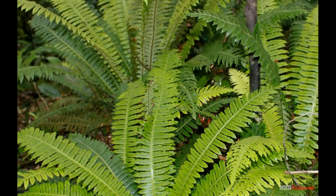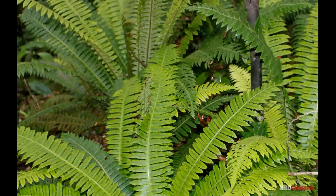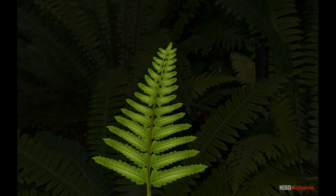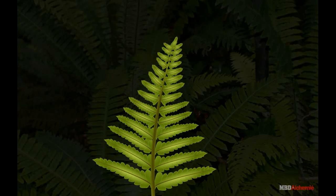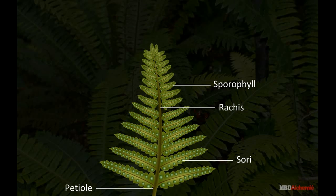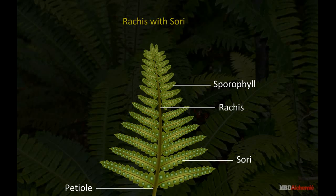Rhizome is densely clothed with numerous scales or rhamenta. Leaves are large, compound and look like a branch, hence named as frond. Each leaf has a short stalk called petiole. The pinnae develop on the main stalk called rachis, which is the continuation of the petiole.